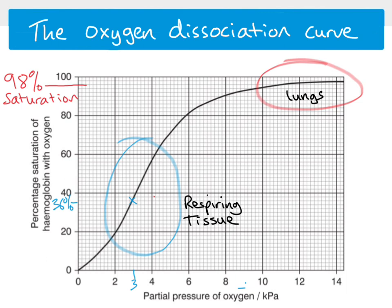We need to explain why that unloading happens, and also why the curve is S-shaped rather than a straight line. With the S-shaped curve, a very small decrease in partial pressure in the steep section leads to a large decrease in percentage saturation — so there are a few things to explain.